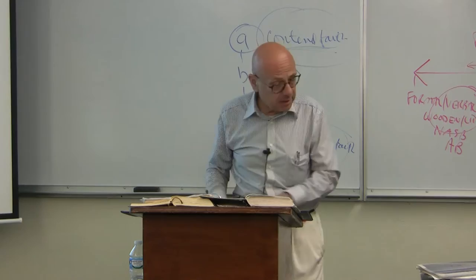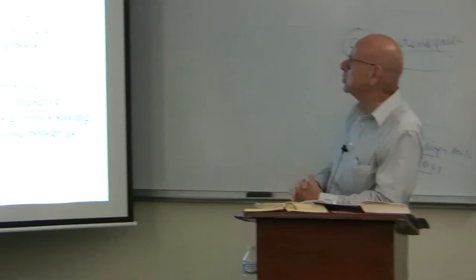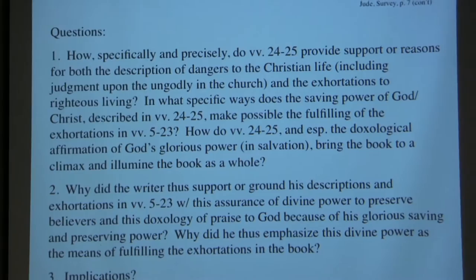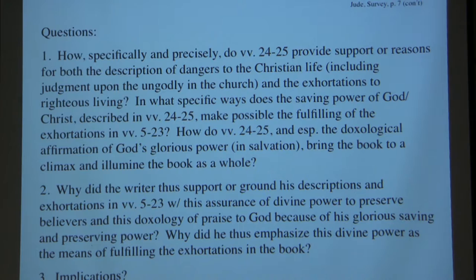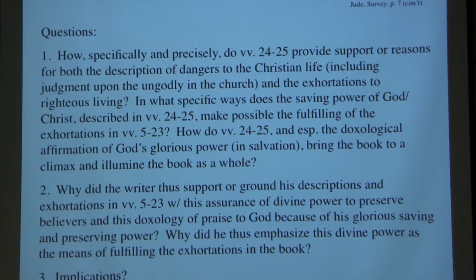We want to raise questions with regard to this. Definitive questions: how, specifically and precisely, do verses 24 through 25 provide support or reasons for both the description of dangers to the Christian life and the exhortations to righteous living? Verses 24 and 25 also substantiate the judgment upon the ungodly in this letter, because he is suggesting that the ungodly do not have to be ungodly — their ungodliness is an affront to grace, a rejection of the divine power available also to them to live different lives. So the divine resources are actually a basis for judgment upon sin.